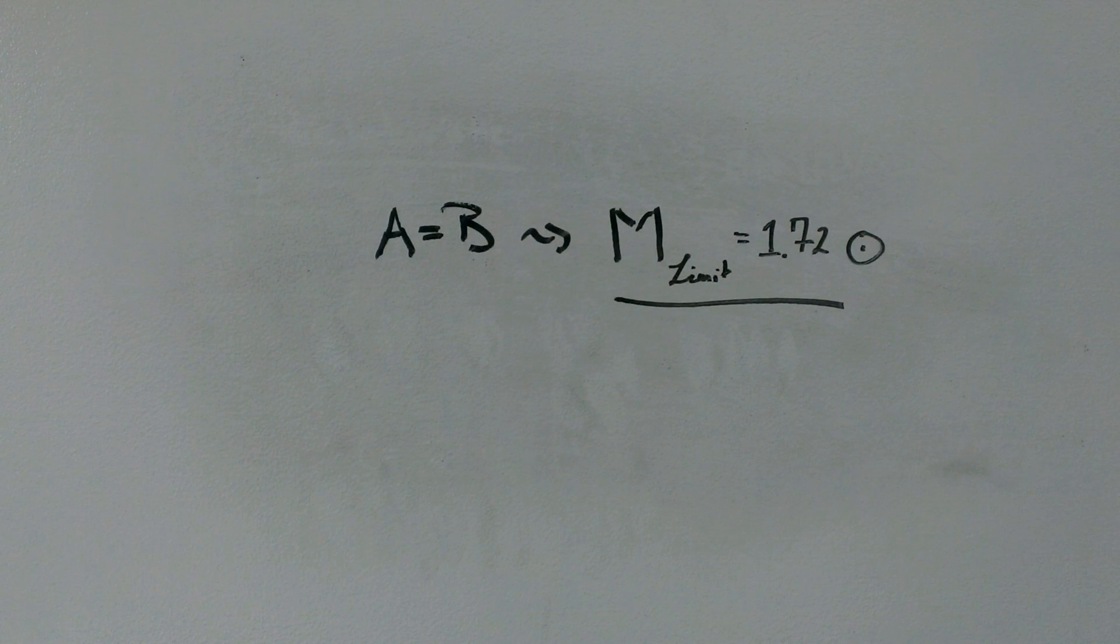It turns out that for finding this mass limit, the name of the game is assumptions. The above derivation made a lot of assumptions, which, while making the math easier, lead to many fallacies.